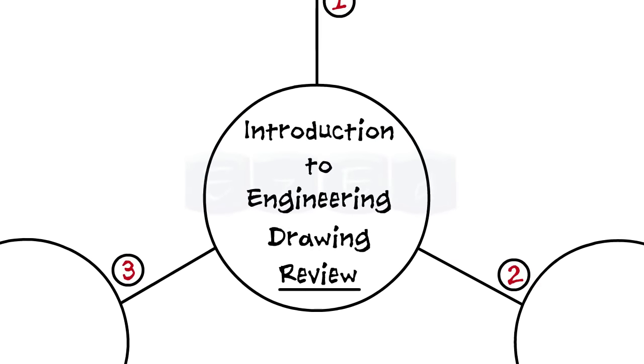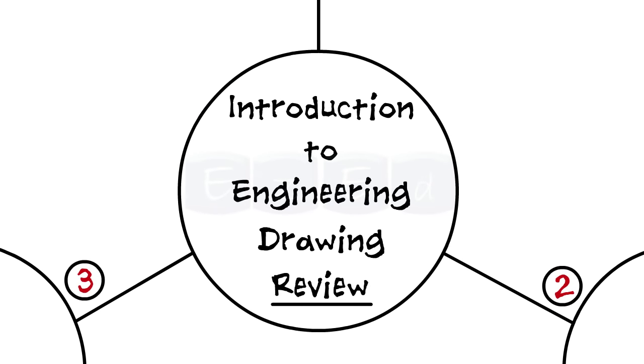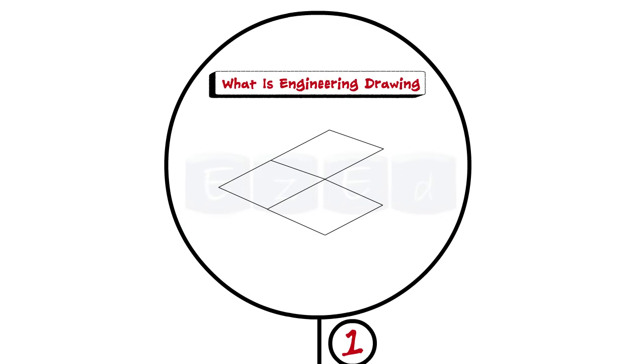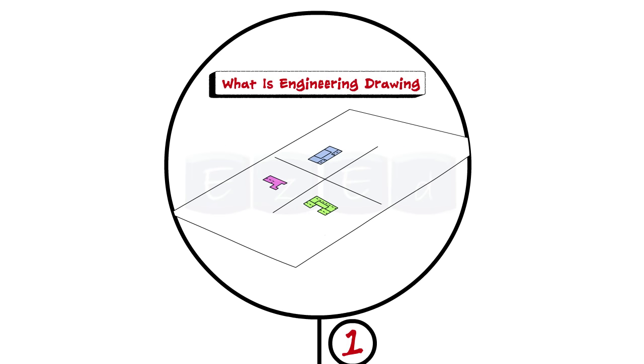Let us take a quick review of what we have learnt in this video lecture. First we have seen that engineering drawing is a type of technical drawing which is used to clearly define the requirements for engineered items such as views, dimensions, and necessary information. It is also called graphical language and helps to communicate.